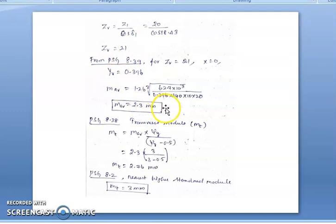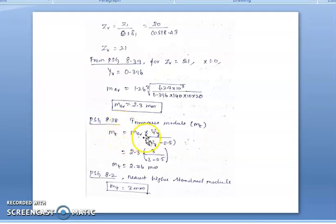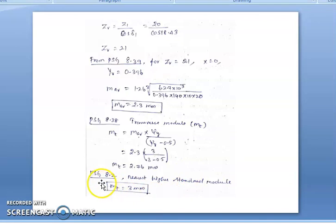This is only the average module. For bevel gears we also calculate the transverse module, available at page 8.38, where m_t = m_avg · ψ_y / (ψ_y − 0.5). With all parameters known, m_t = 2.76 mm. Standardizing from page 8.2, the next higher module is 3 mm, so the transverse module m_t = 3 mm.